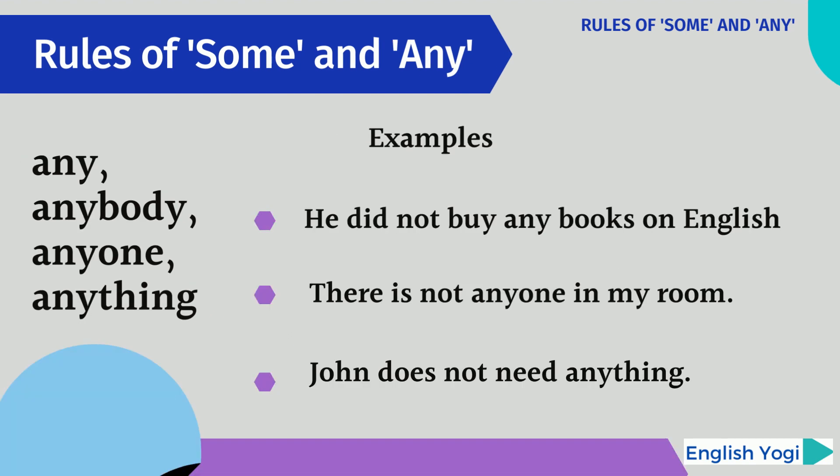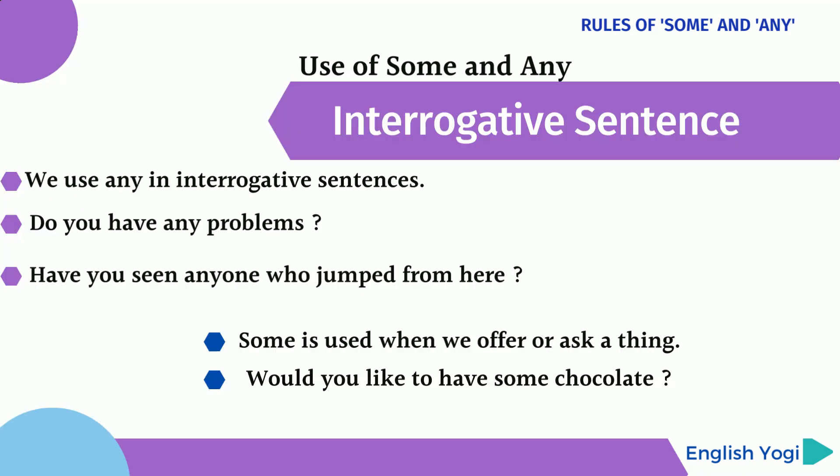The second part of the basic rule is: we use 'any', 'anybody', 'anything' in negative sentences. From the examples, we can see: 'He did not buy any books on English.' Second example: 'There is not anyone in my room.' And the third example: 'John does not need anything.' So all three examples are negative sentences, and that's why we have used 'any', 'anyone', and 'anything'.